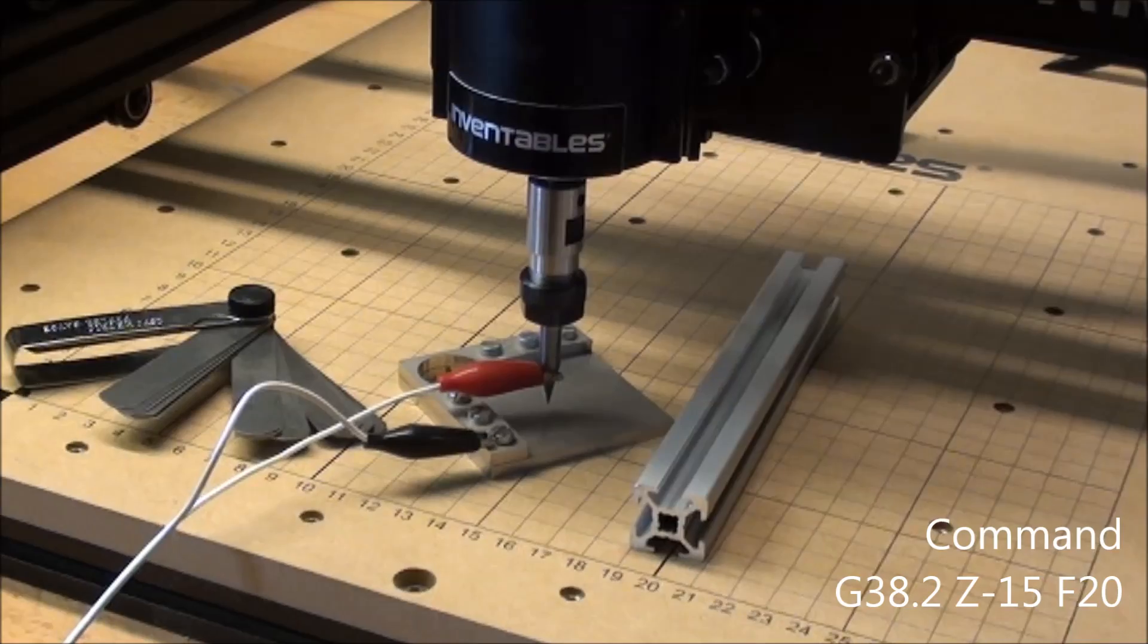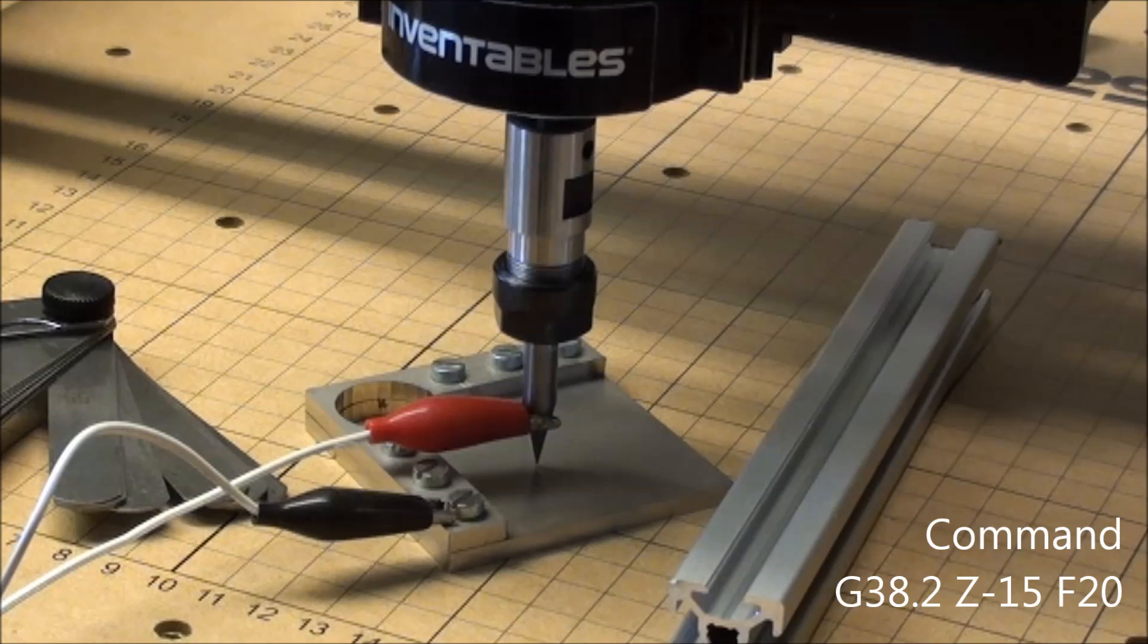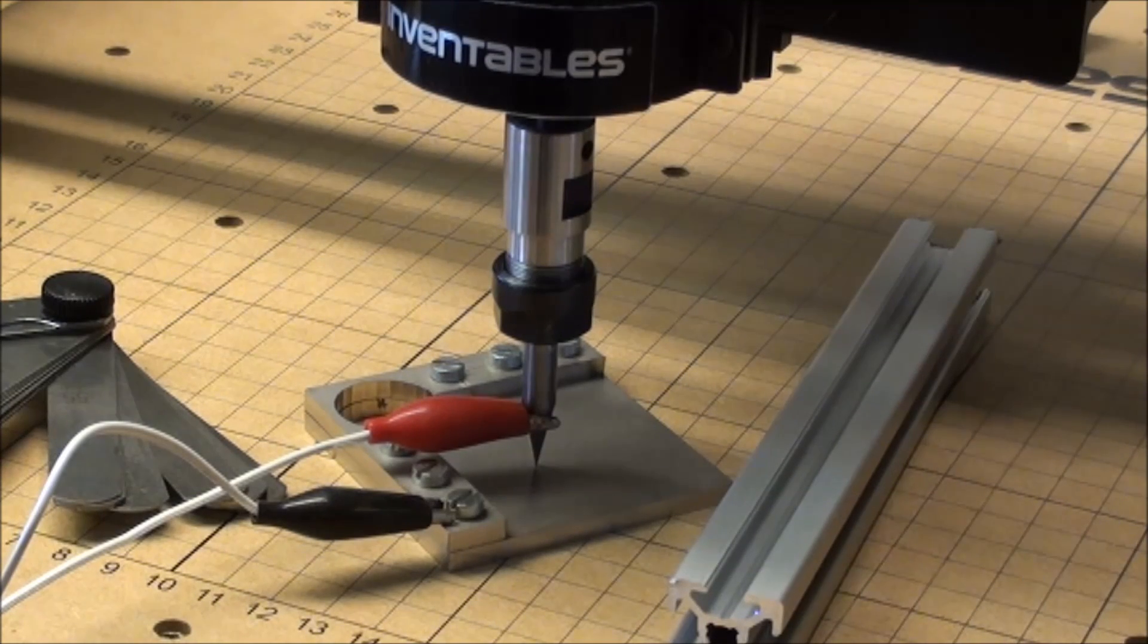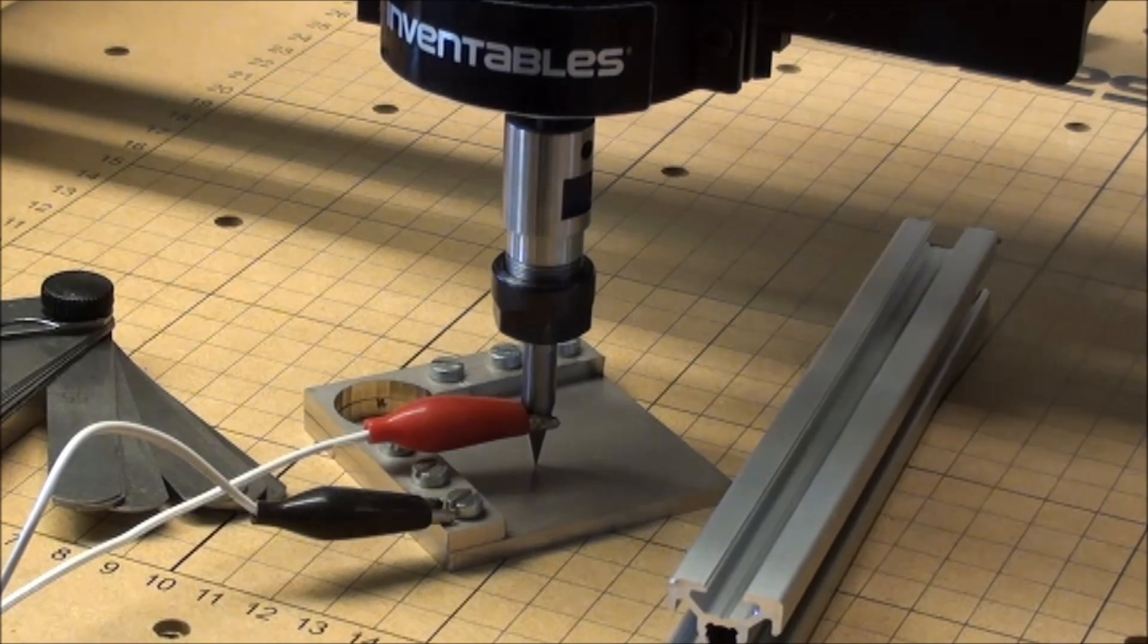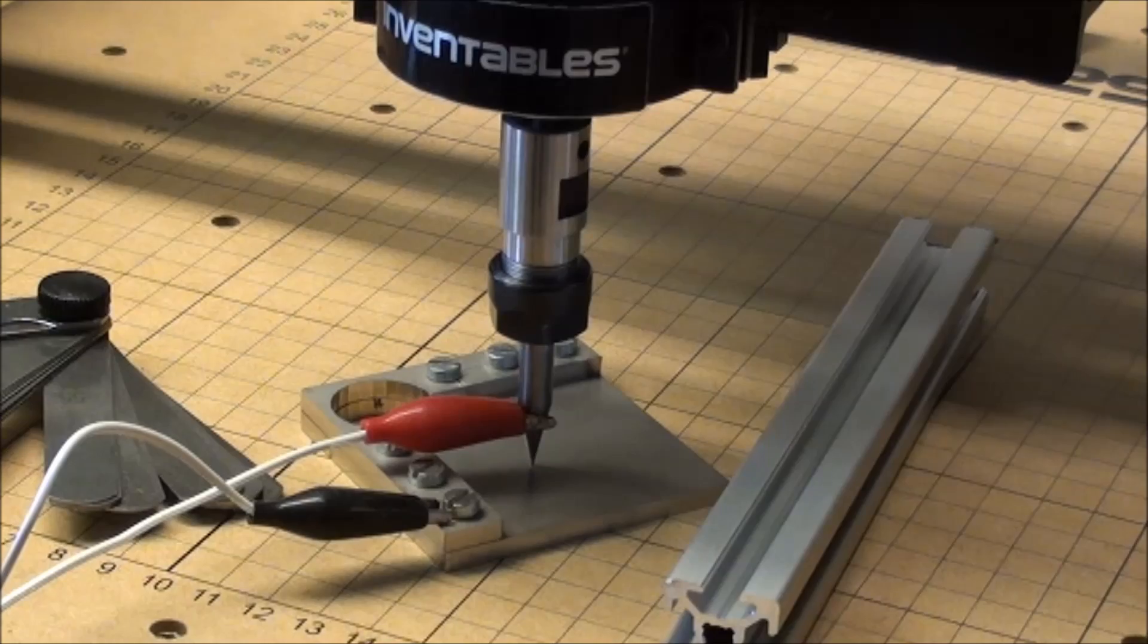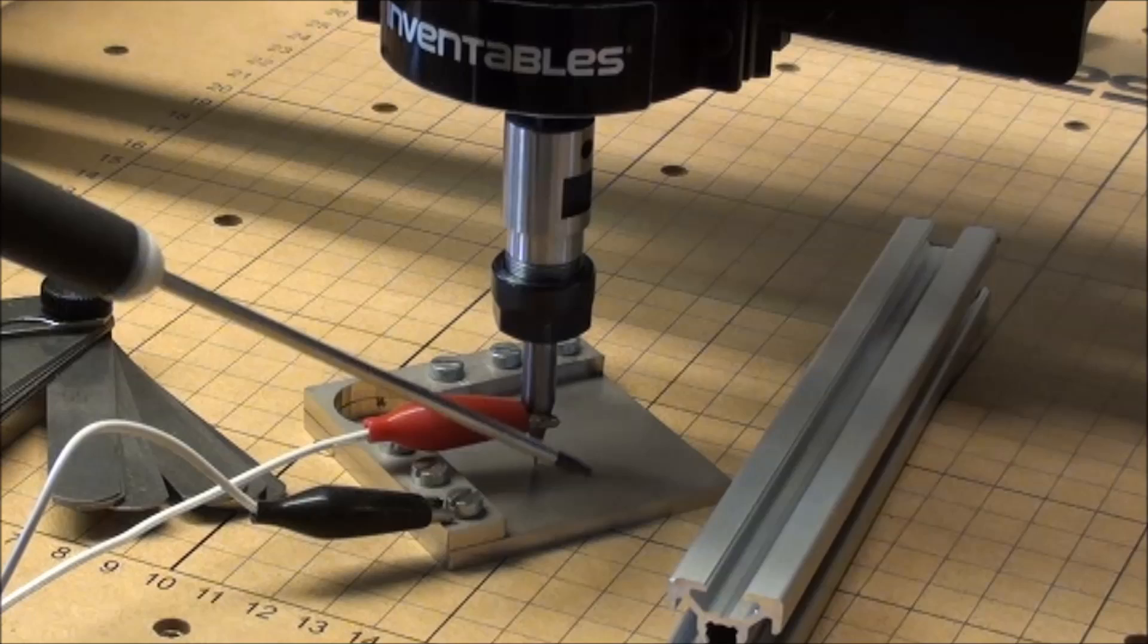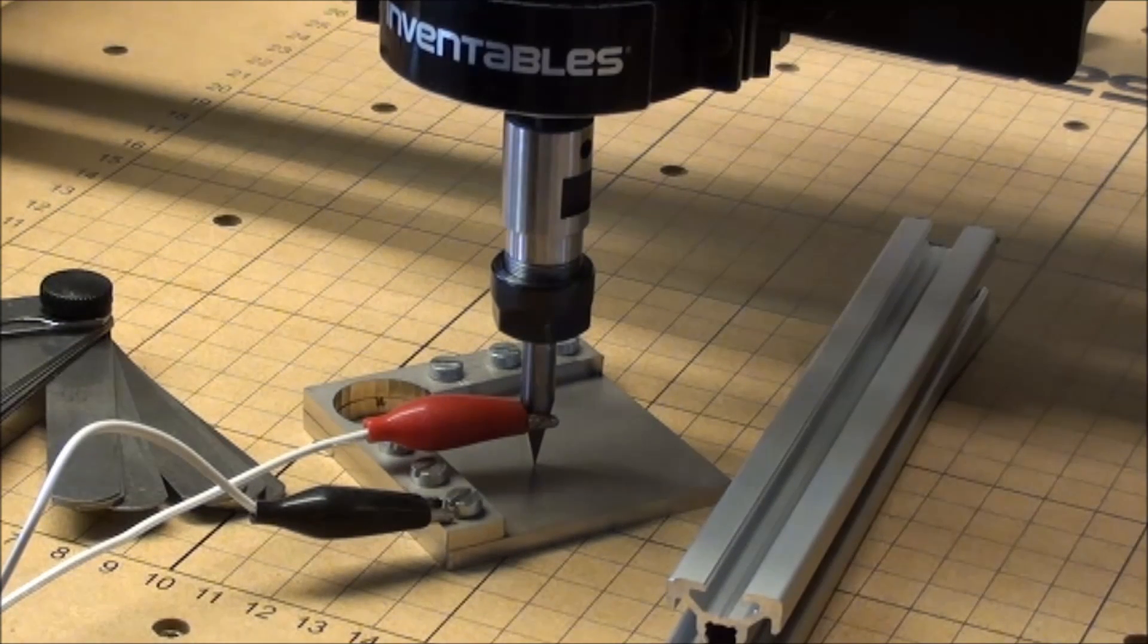I have issued the order G30.8 Z minus 15 F20, which will make it move up to 15 millimeters with a speed of 20 onto the heads. Now I know that the spindle tip is the thickness of this plate above the work table.